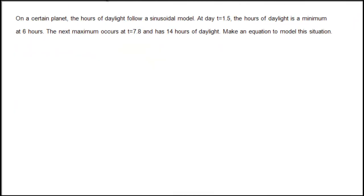This problem is about a sinusoidal model. On a certain planet, the hours of daylight follow a sinusoidal model. At day t equals 1.5, the hours of daylight is a minimum at 6 hours. The next maximum occurs at time equals 7.8 and has a maximum of 14 hours of daylight. We need to write an equation to model this situation.